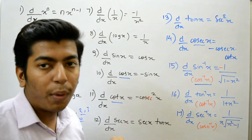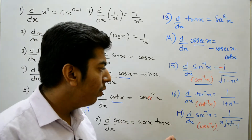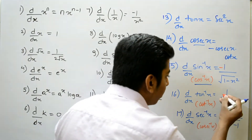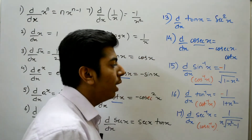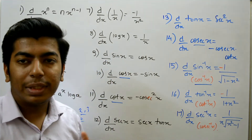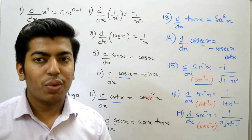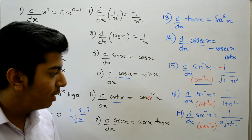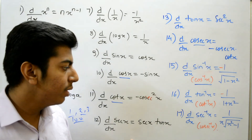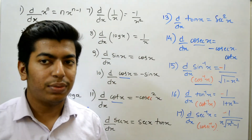The derivative of tan inverse x is equal to 1 upon 1 plus x squared. The derivative of cot inverse x is minus 1 upon 1 plus x squared. The derivative of sec inverse x is 1 upon x times under root of x squared minus 1. The derivative of cosec inverse x is minus 1 upon x times under root of x squared minus 1.